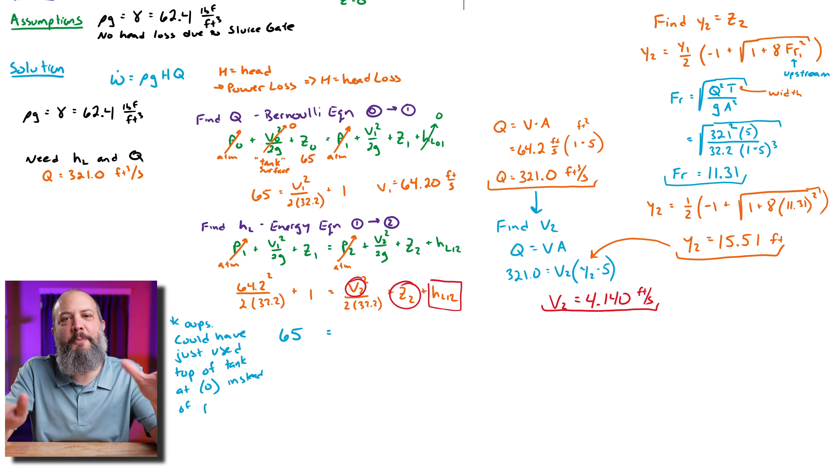When you're doing Bernoulli equation, you can compare any two points along the streamline. You can skip over points, you can go from the very beginning to the very end. It doesn't have to be from the two that are right next to each other. I still got to the same answer so it didn't mess me up at all, but it was extra calculator work and cost a little bit of time.